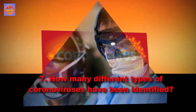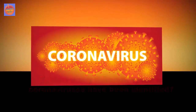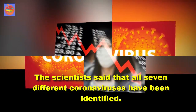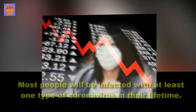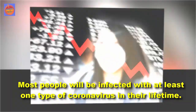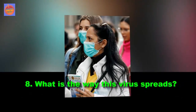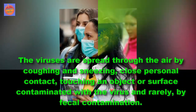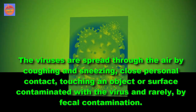Question 7: How many different types of coronaviruses have been identified? Scientists say that seven different coronaviruses have been identified. Most people will be infected with at least one type of coronavirus in their lifetime. Question 8: What is the way this virus spreads? The viruses are spread through the air by coughing and sneezing.